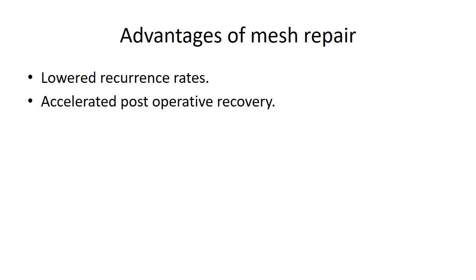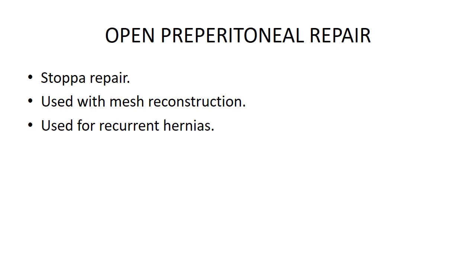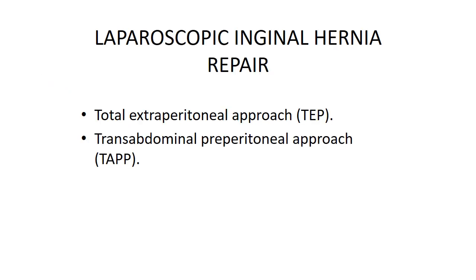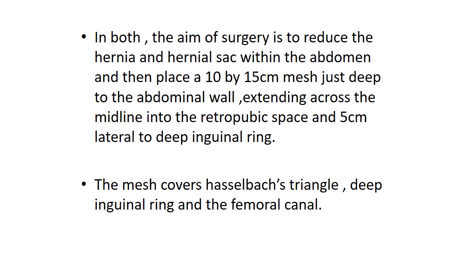Advantages of mesh repair: lowered recurrence rates and accelerated post-operative recovery. Preperitoneal repair (Stoppa) uses mesh reconstruction and is used for recurrent hernias. In inguinal hernia repair — total extraperitoneal approach (TEP): the aim of surgery is to reduce the hernia and hernial sac within the abdomen and place a 10 by 15 cm mesh just deep to the abdominal wall, extending across the midline into the retropubic space and 5 cm lateral to the deep inguinal ring. The mesh covers Hesselbach's triangle, the deep inguinal ring, and the femoral canal.